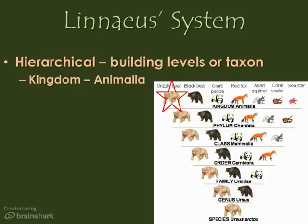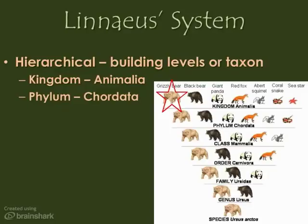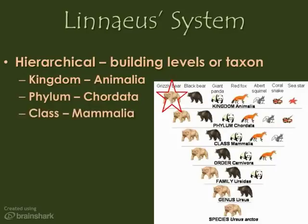Animalia are heterotrophs — that is their main characteristic that we group them by. Animals that have a notochord, or the beginnings of a spine at some point in their life, are in the phylum Chordata. Grizzly bears have a notochord and it develops into a spinal cord. This doesn't happen in all animals, but it does happen in grizzlies and all animals like grizzlies.